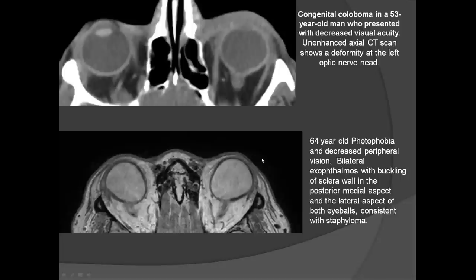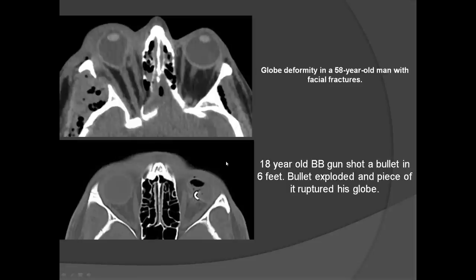Now for pathologies: abnormal shape of the eye globe. The normal eyeball is round; an abnormal shape with a little bulge is called a coloboma. A buckling of the scleral wall in the medial part is called a staphyloma. In trauma, the eyeball may be deformed — the patient may retain or lose some vision. This patient definitely lost left-eye vision because a bullet fragment ruptured the eyeball.